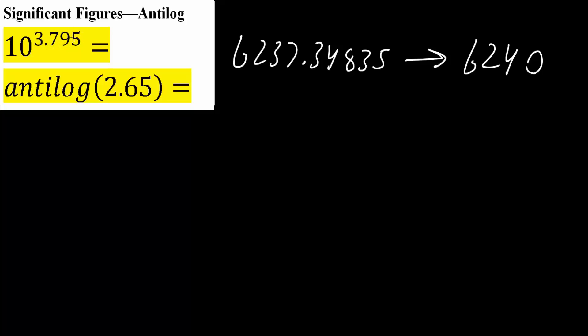So this right here is 3 significant figures, and so our final answer would only have 3 significant figures. 6240 has 3 significant figures. The 0 at the end does not count.